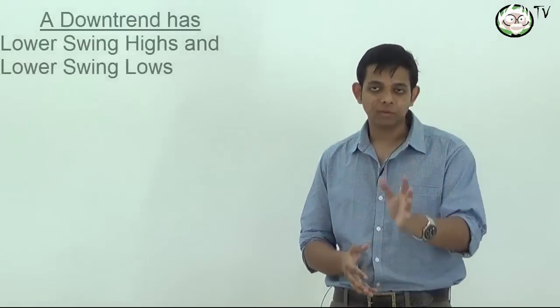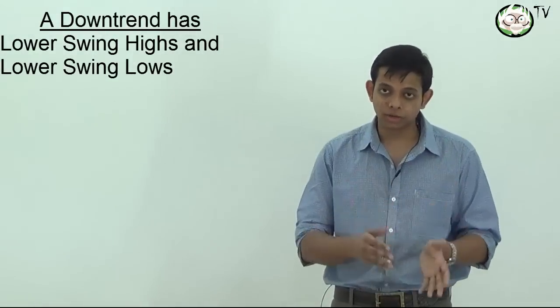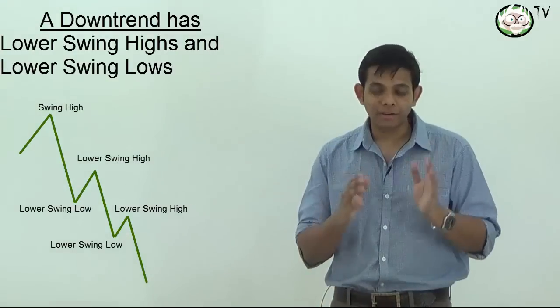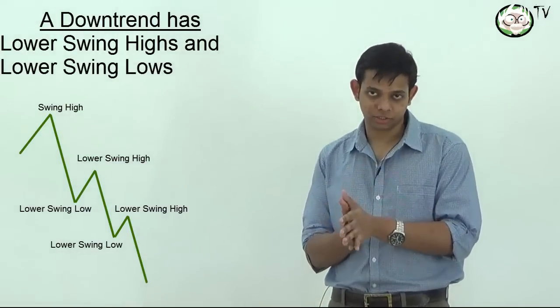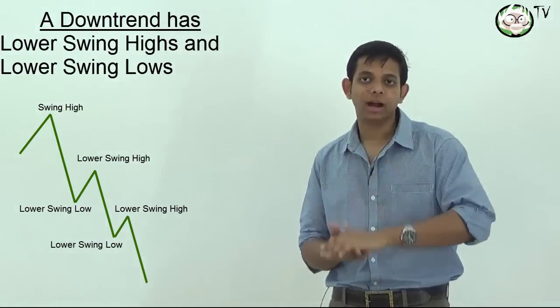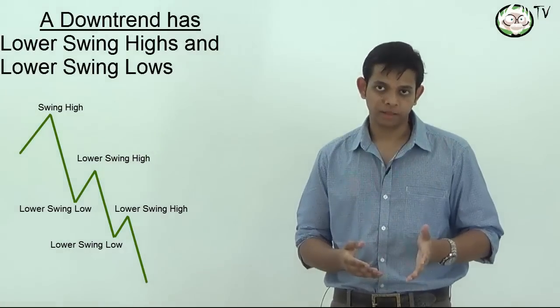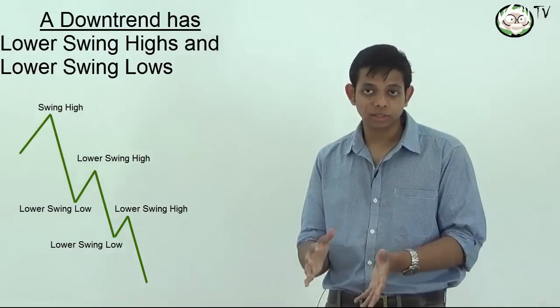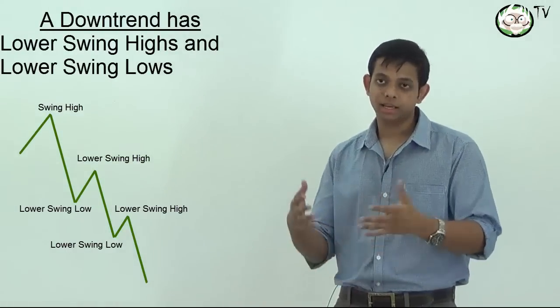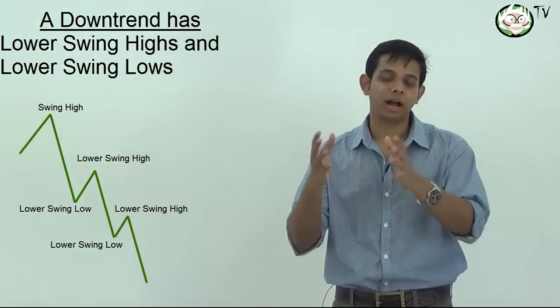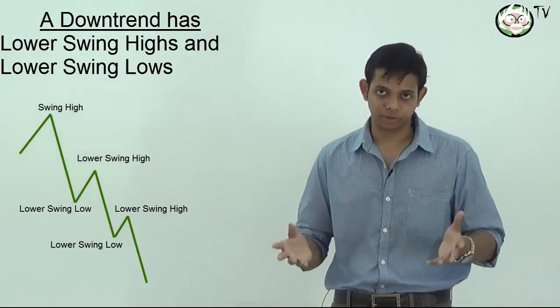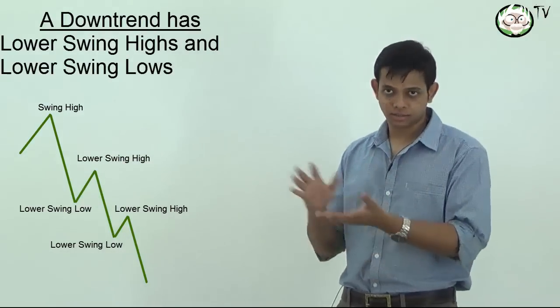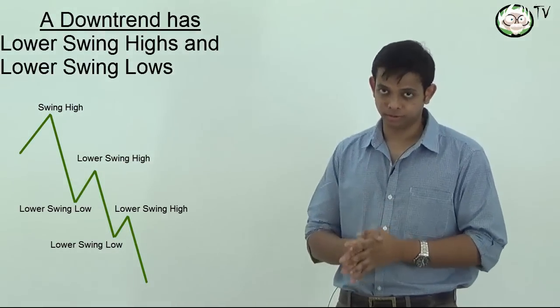Likewise, a downtrend has lower swing highs and lower swing lows. So every swing high you see on this chart has a lower swing high than the previous one. A set of lower swing highs and lows means the market is in a downtrend, and a set of higher swing highs and lows is an uptrend. Words may confuse but if you look at charts things become much more simple.